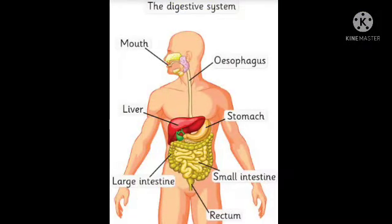In the mouth, food is broken down into smaller particles by the teeth and mixed with saliva from the salivary glands. Saliva contains the enzyme salivary amylase, which converts starch into sugar. The food then passes through the esophagus into the stomach. In the stomach, gastric glands produce gastric juice containing the enzyme pepsin, hydrochloric acid, and mucus. Pepsin breaks down proteins, hydrochloric acid makes the medium acidic and helps pepsin act, and mucus protects the stomach wall from acid.